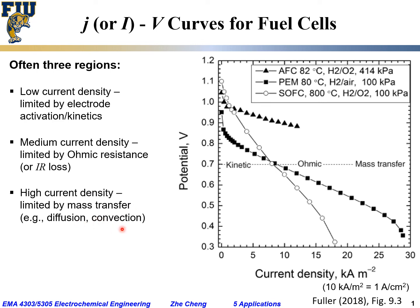In summary, the JV curve for three common types of fuel cells behaves very similarly: nearly the same open circuit voltage at zero current density, followed by a voltage decrease as current increases. This decrease can be separated into three regions: initially activation or kinetics limited at low current density; a straight line limited by IR or ohmic resistance in the middle; and at high current density, a sharp bend downward due to mass transfer limitation by diffusion or convection.